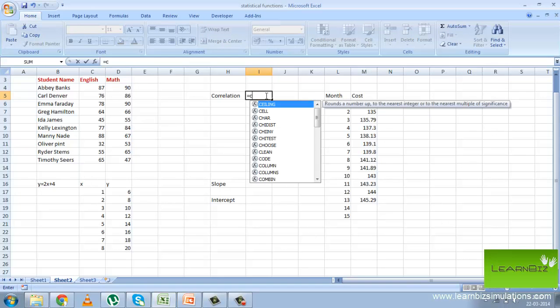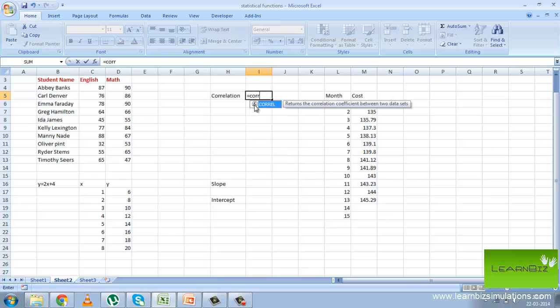Now let us look at how these functions can be used in the work. Here we are trying to find out if there is a correlation between the English and Max marks of the students. As you can see here, the value is 0.7, that means there is a high correlation between the two.